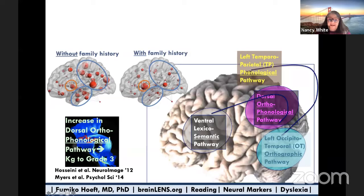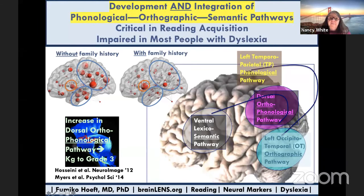We went over this last week, but I want to emphasize one more time: development and integration of phonological, orthographic, and semantic pathways are critical in reading acquisition for everyone, but they're impaired in most people with dyslexia. That's why we have to teach in a way that integrates those pathways for people who aren't able to do it for themselves.